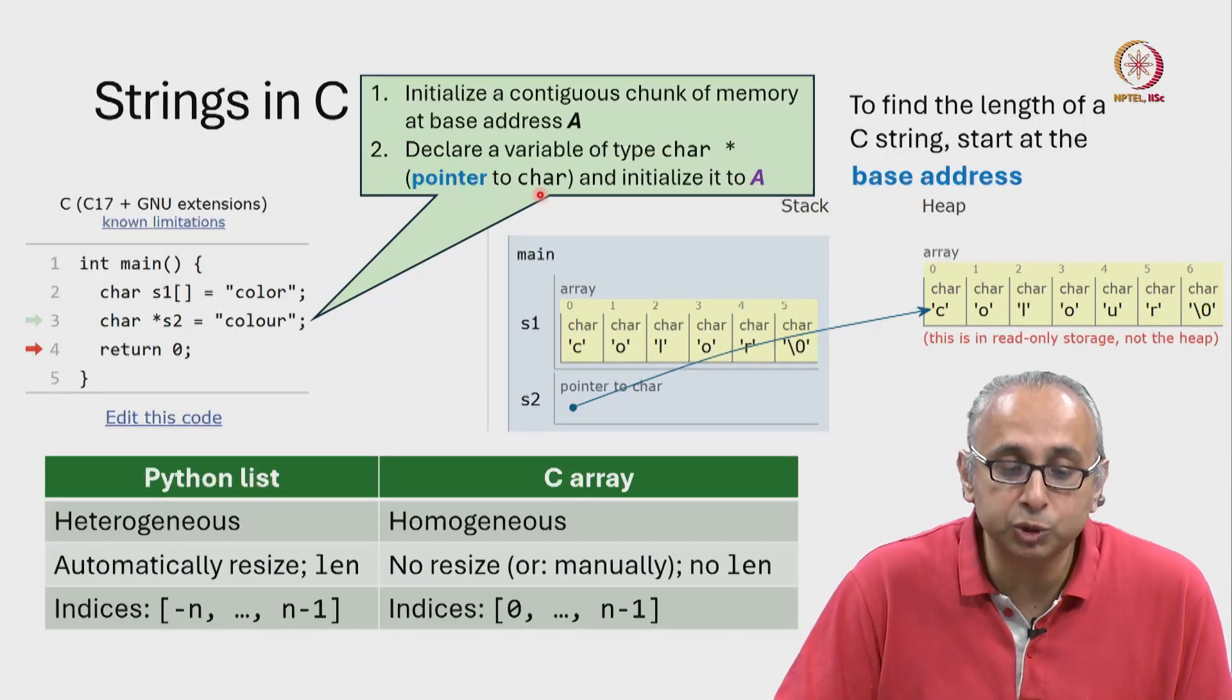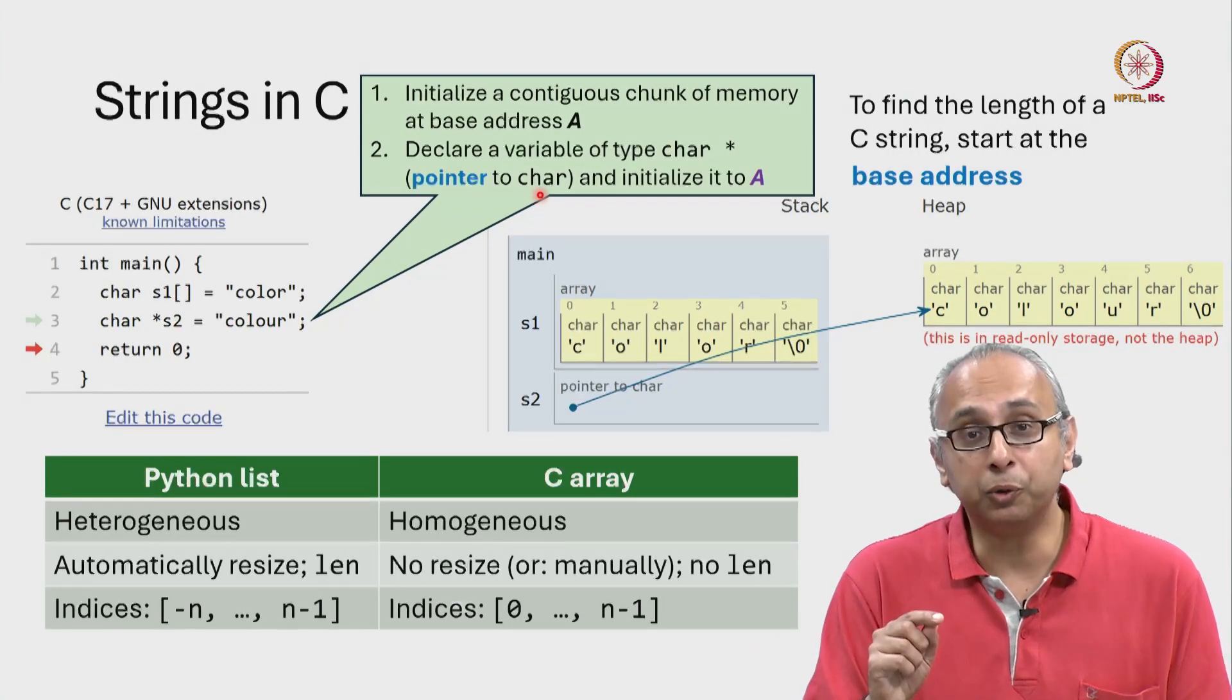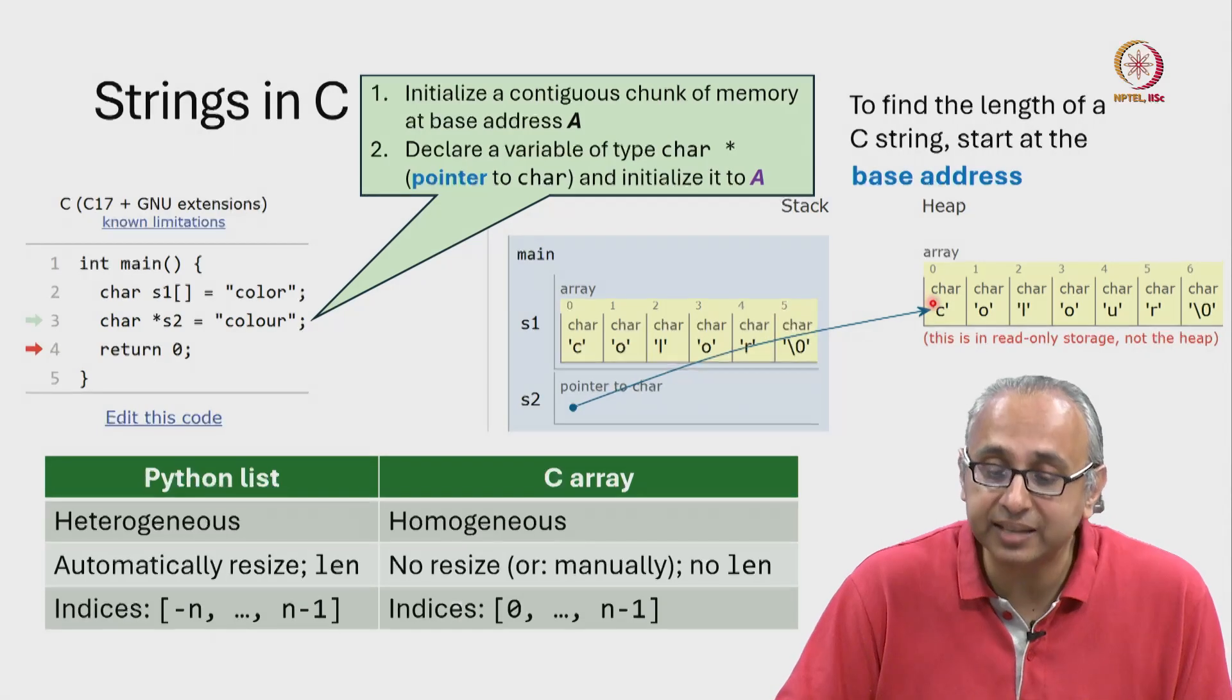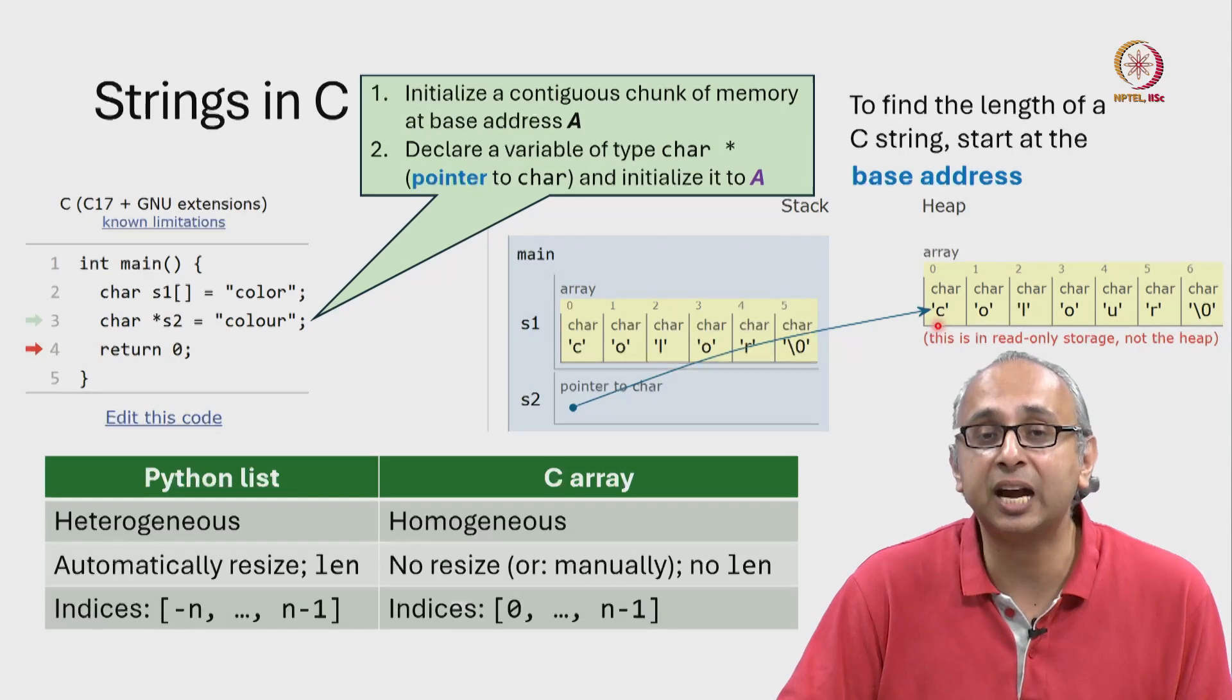Now if I know it's a pointer to char, I know that the data that lives at that address is of type char.